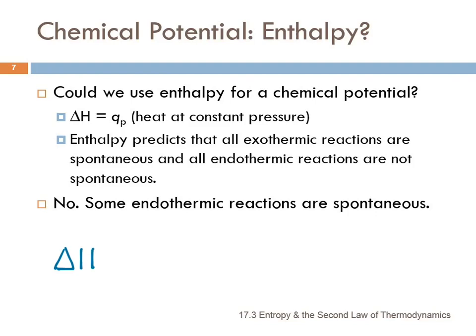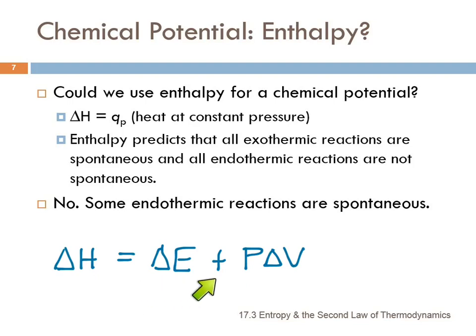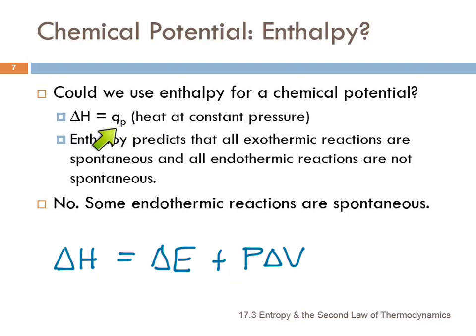The change in enthalpy equals the change in internal energy plus the pressure times the change in volume. This is a form of work, and that's a form of heat, so we've got heat and work. If the pressure is constant, then we can equate the change in enthalpy to Q at constant pressure.